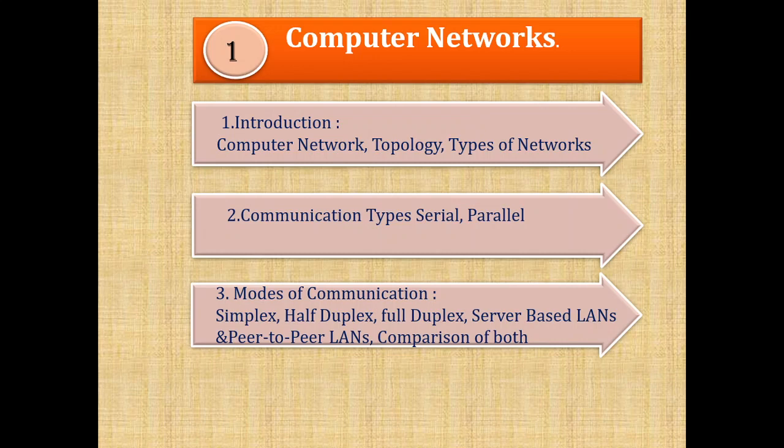Half Duplex means one at a time — that kind of communication is called Half Duplex communication. Full Duplex communication means where both parties are able to communicate with each other simultaneously — that communication is called Full Duplex communication.